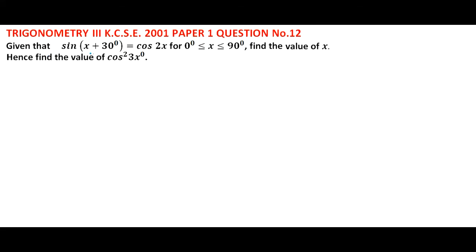Given that sine x plus 30 degrees is equals to cos 2x, for 0 degrees to 90 degrees, find the value of x, hence find the value of cos squared 3x. So let's start with the first one.